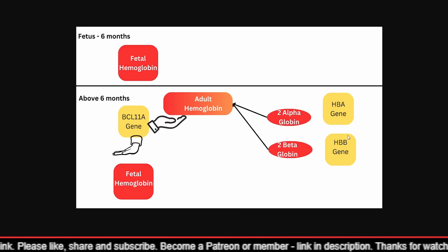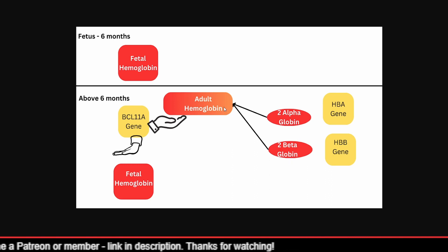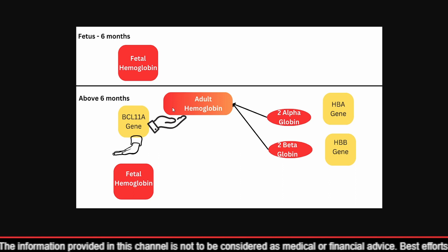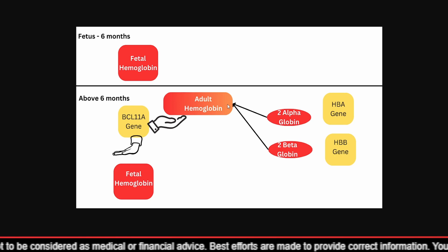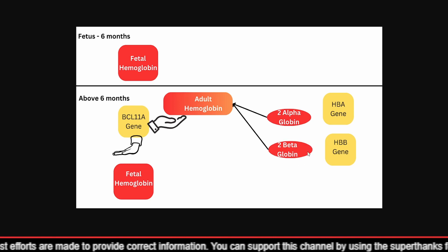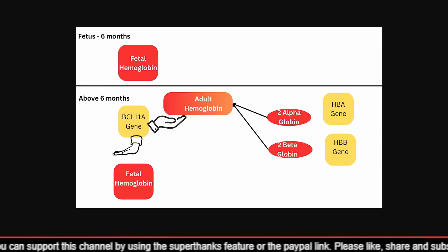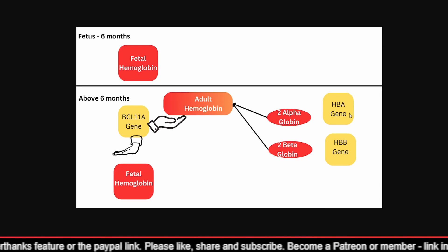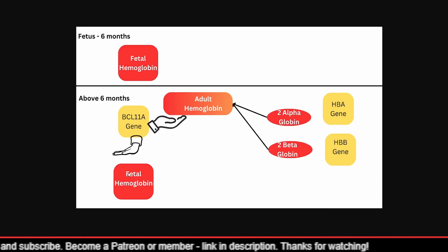Now in case of sickle cell disease, the HBB gene is defective, as a result of which the beta globin that is produced is defective, and it results in an adult hemoglobin which has got sickle cells, causing the person to suffer from sickle cell disease. The way Bluebird Bio is tackling the problem is by correcting the HBB gene to restore proper production of beta globin and therefore proper production of adult hemoglobin. The way CRISPR Therapeutics handles it is by suppressing or switching off the BCL11A gene, as a result of which fetal hemoglobin production resumes, and fetal hemoglobin has the ability to pick up a lot of oxygen, so the person is back to normal.